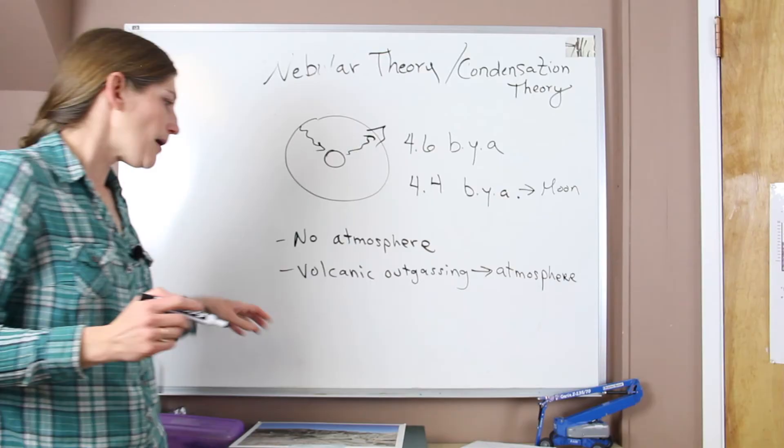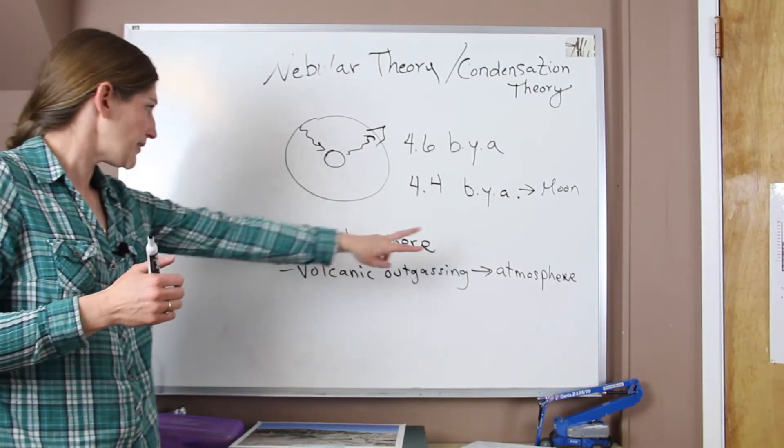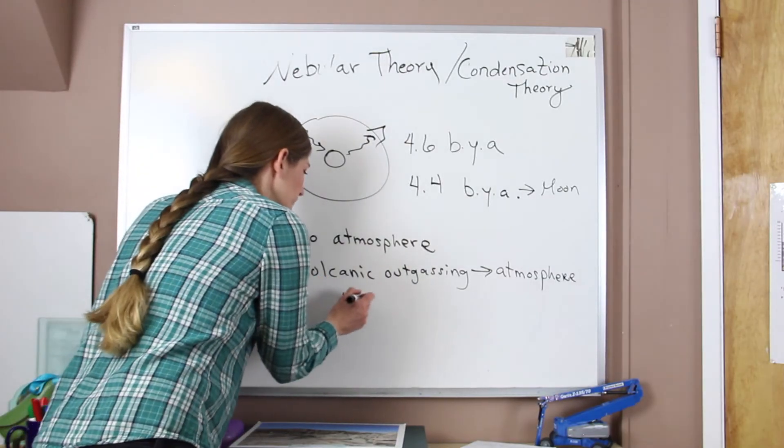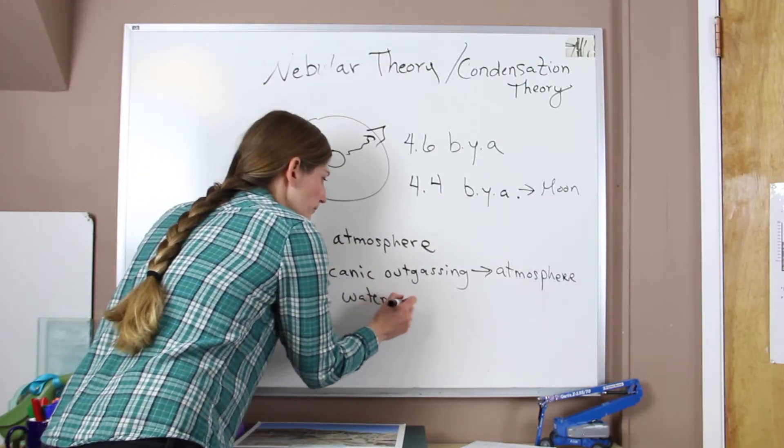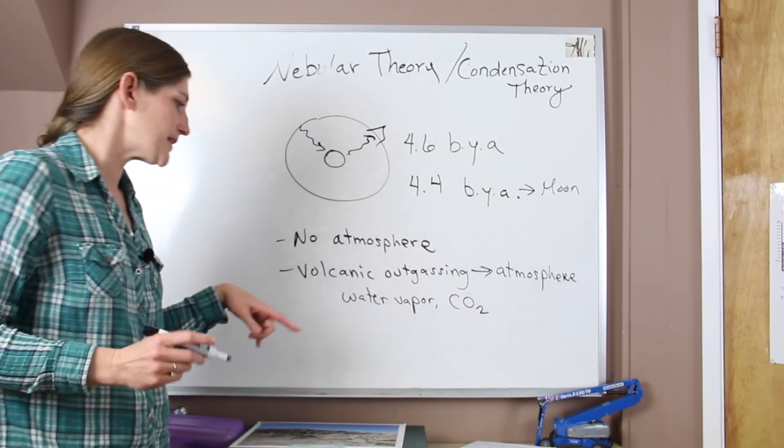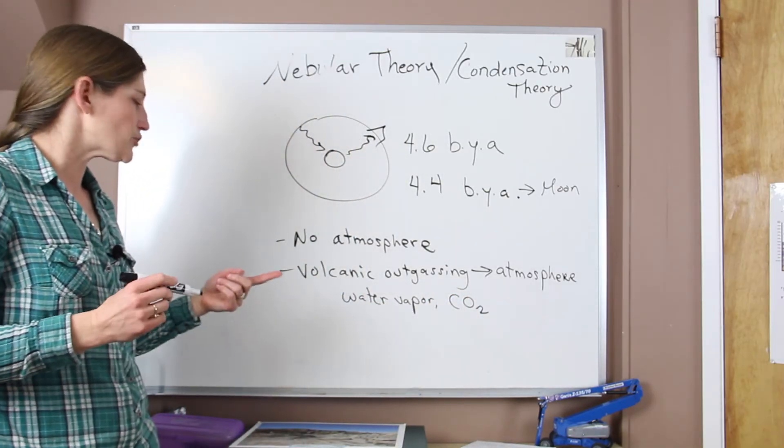Okay. Now our early earth, the atmosphere was very different than today. It had water vapor and lots of carbon dioxide. So our CO2 was really strong.